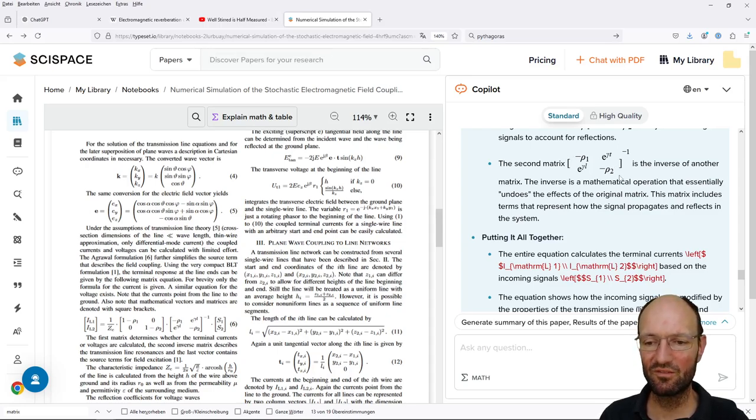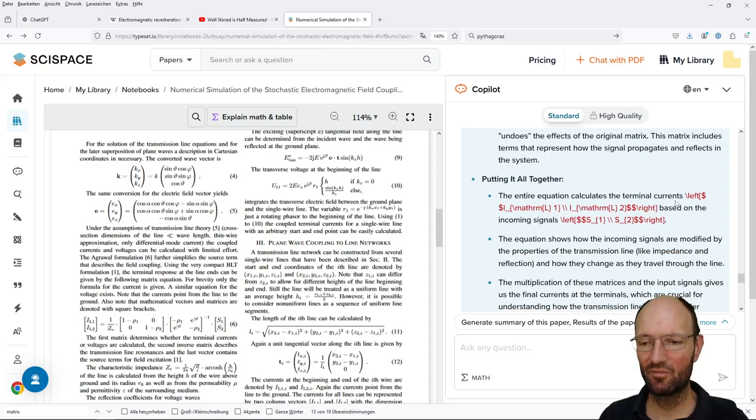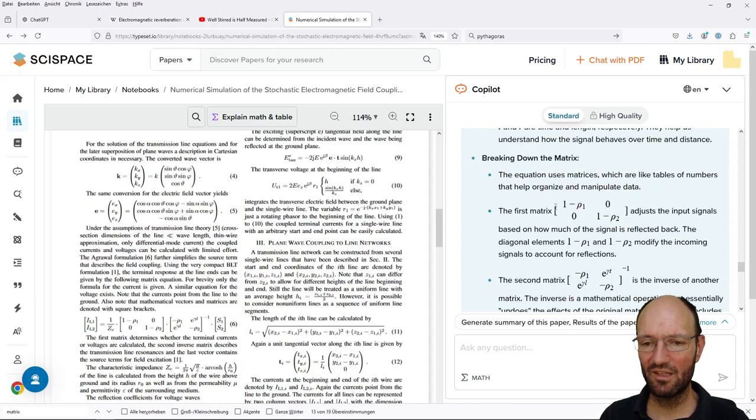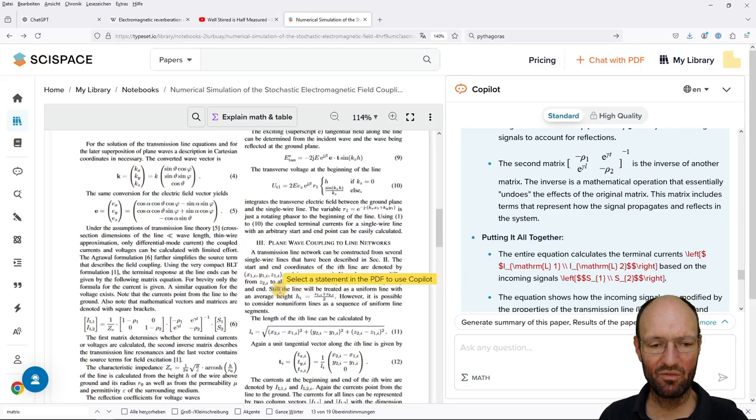And here something happens that obviously the LaTeX code is not properly parsed. The entire equation, okay, and so the second matrix here. But what is with the third thing here, the vector?